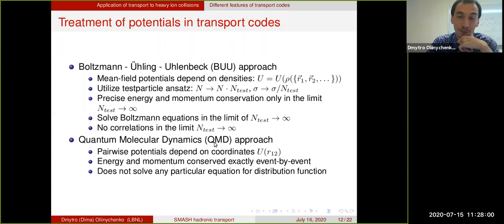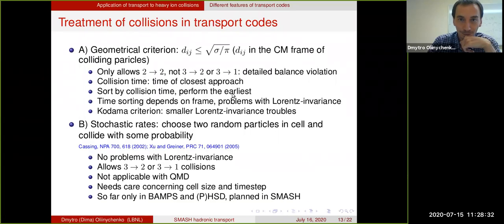This difference between BUU and QMD only matters when you have mean field potentials. If you don't have mean field potentials, it doesn't really matter whether you are using BUU or QMD. In Jetscape, SMASH is used without mean field potentials, although in principle mean field potentials can be switched on. So it doesn't really matter if it is BUU or QMD. However, SMASH is mostly following BUU approach. It is not exactly conserving energy and momentum, however it is solving Boltzmann equation.